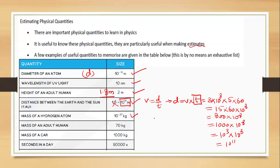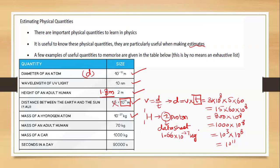The mass of a hydrogen atom is 10⁻²⁷ kg. Why? Because hydrogen has only one proton, and the data sheet gives the mass of a nucleon as 1.66 × 10⁻²⁷ kg. Since there is only one nucleon, the coefficient rounds to 1 and the order of magnitude is 10⁻²⁷. The mass of an adult human is around 70 kg, which is closer to 100, so its order of magnitude is 10².